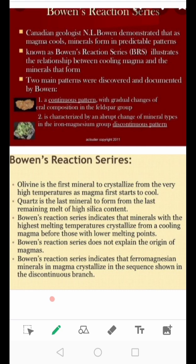We have two branches: the continuous series and the discontinuous series. The continuous series involves gradual changes of mineral composition in the feldspar group — specifically, the plagioclase feldspar. The discontinuous series is characterized by an abrupt change of mineral types in the iron-magnesium group.